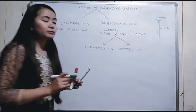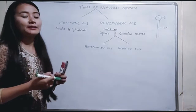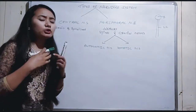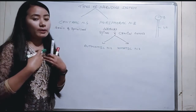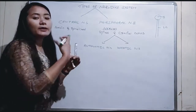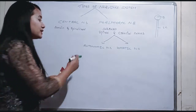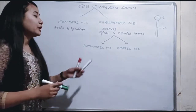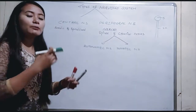The Somatic Nervous System controls nerves that are under our voluntary control — the activities we can consciously control.